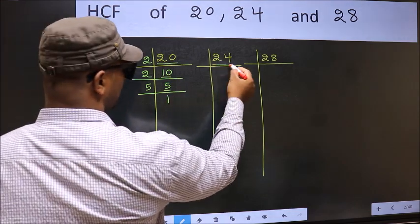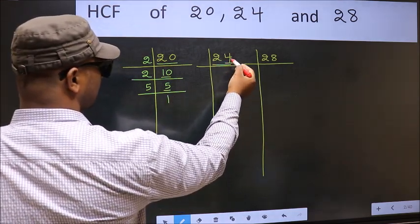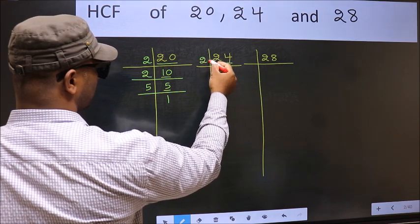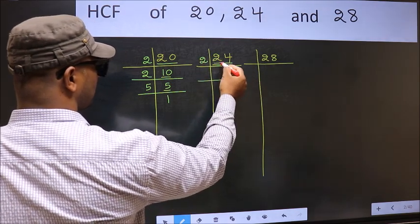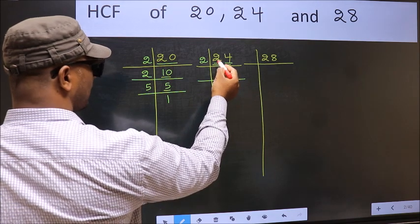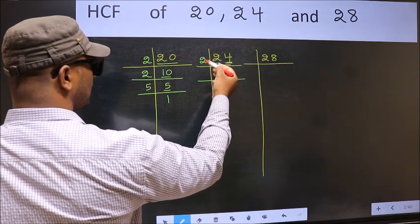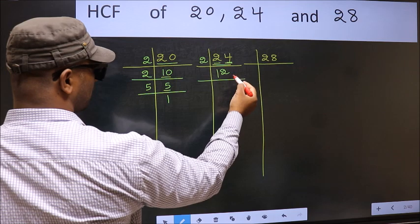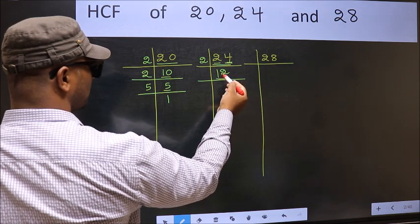Now the other number, 24. Last digit 4, even, so take 2. First number 2. When do we get 2 in 2 table? 2 times 1 is 2. The other number 4. When do we get 4 in 2 table? 2 times 2 is 4. Now here we have 12.